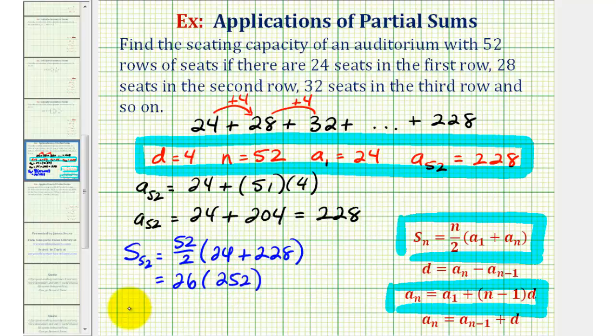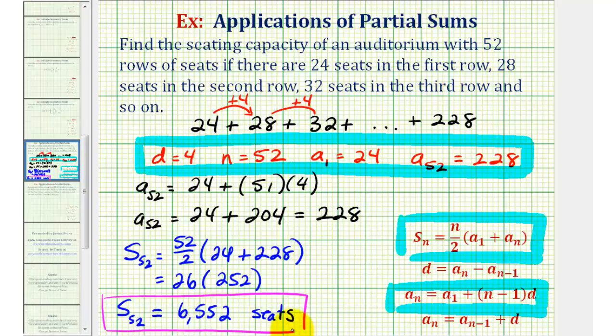So the number of seats in the auditorium, or S₅₂, is equal to 26 times 252, which equals 6,552. This would be the number of seats. I hope you found this explanation helpful.